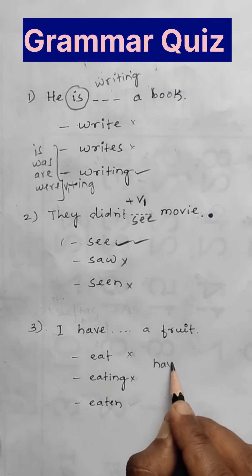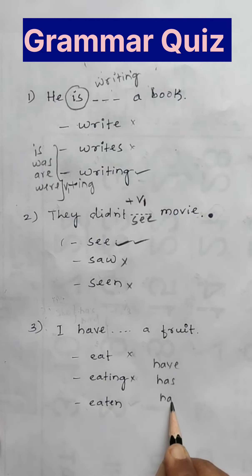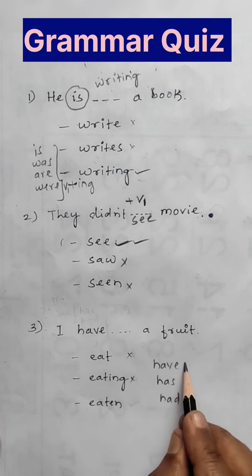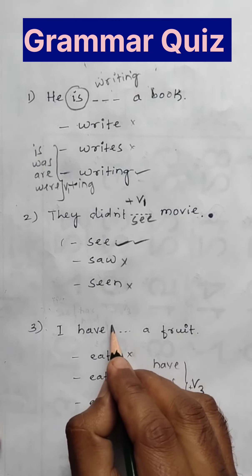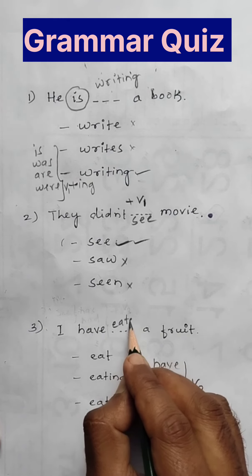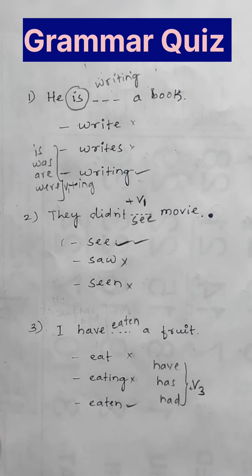It may be have, has, or had. That time here, what will come? V3 will come. This is very important. So here, I have eaten is the answer. I hope you got it.